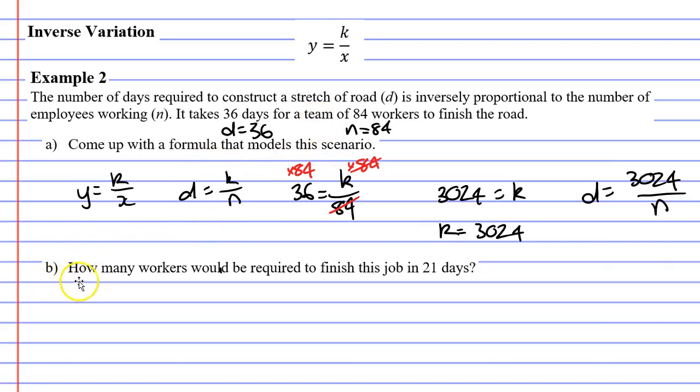Moving now on to question B, how many workers would be required to finish this job in 21 days? What we do is we take our new formula where we've got a constant value in place of k, the constant value being 3,024. We want to figure out how many workers are required to finish this job in 21 days, meaning that D equals 21.